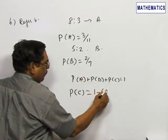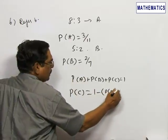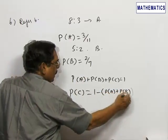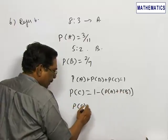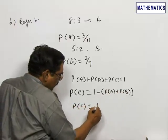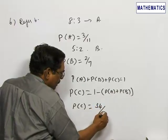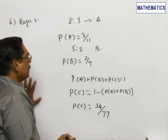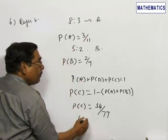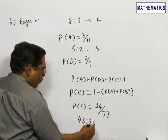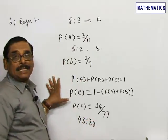If you substitute all the values here you will get P of C will be equal to 34 by 77. Hence the odds against C will be 43 is to 34. Therefore choice 3 is correct.